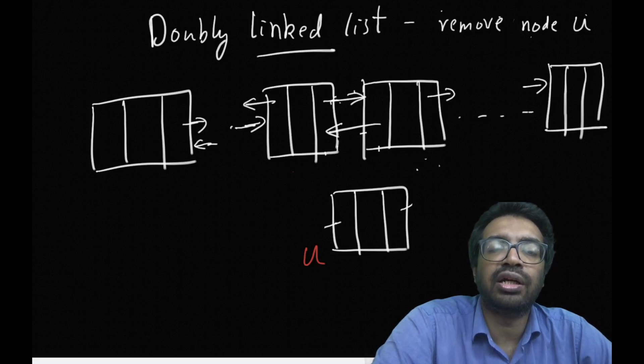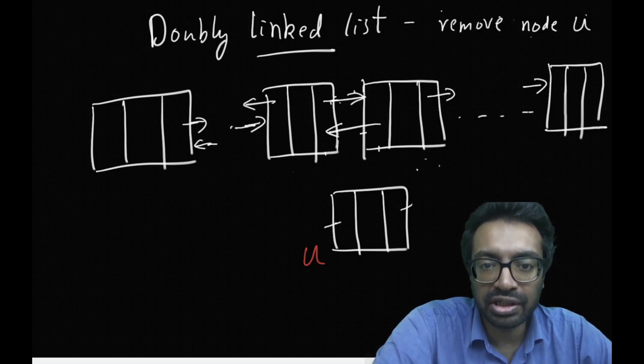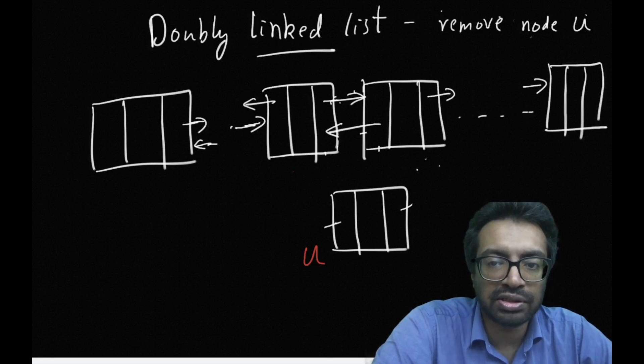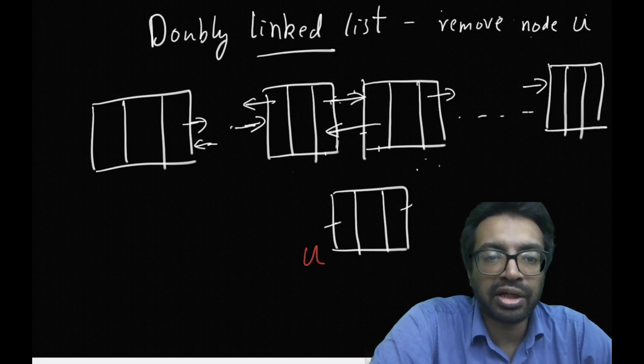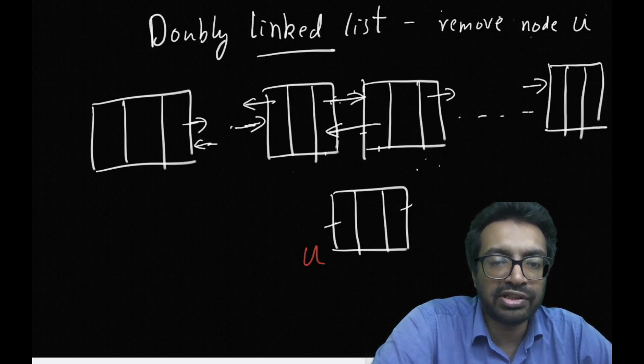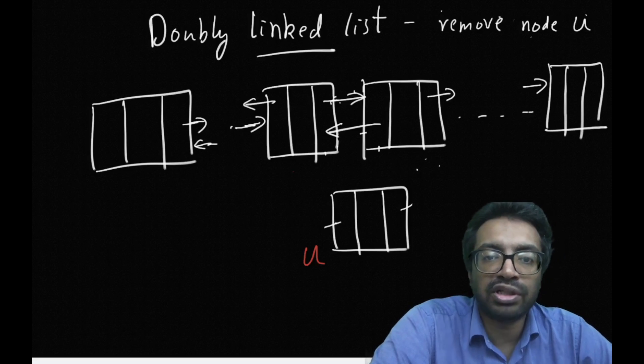So that is going to take me a time which depends on where U is. It is not a constant time. It is going to depend on the location of U. If U was the second last element, it is going to take me N minus 1 traversals, N minus 1 node traversals.